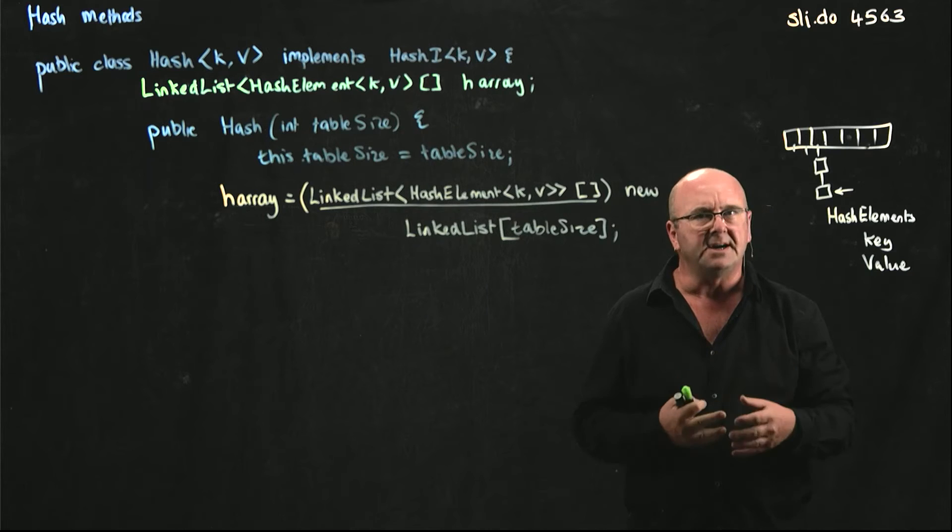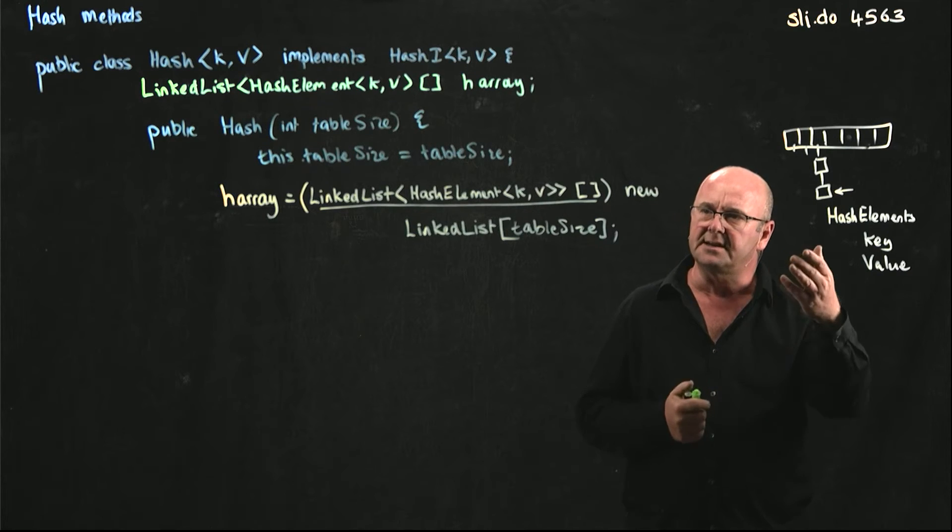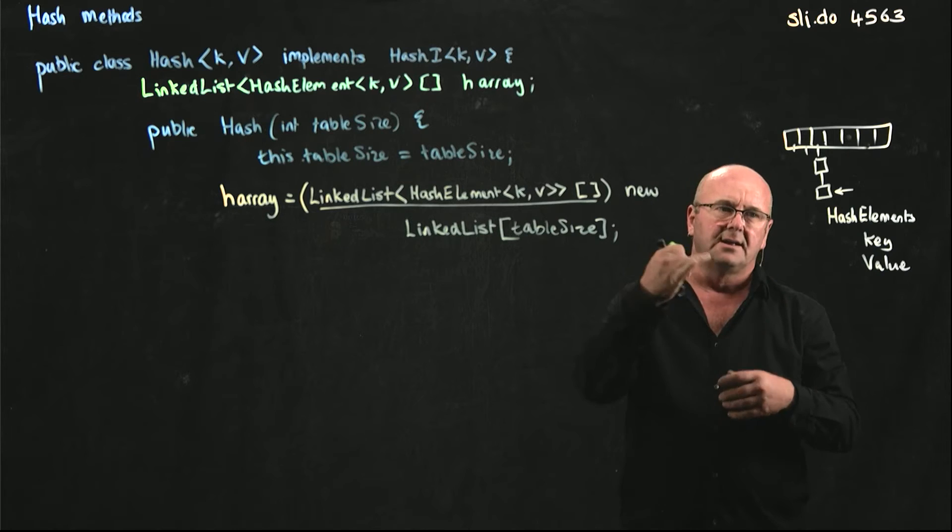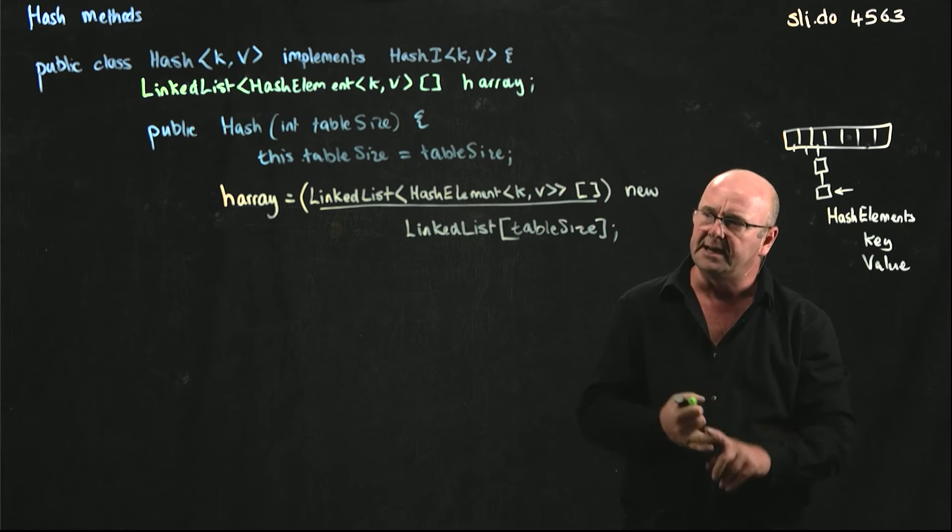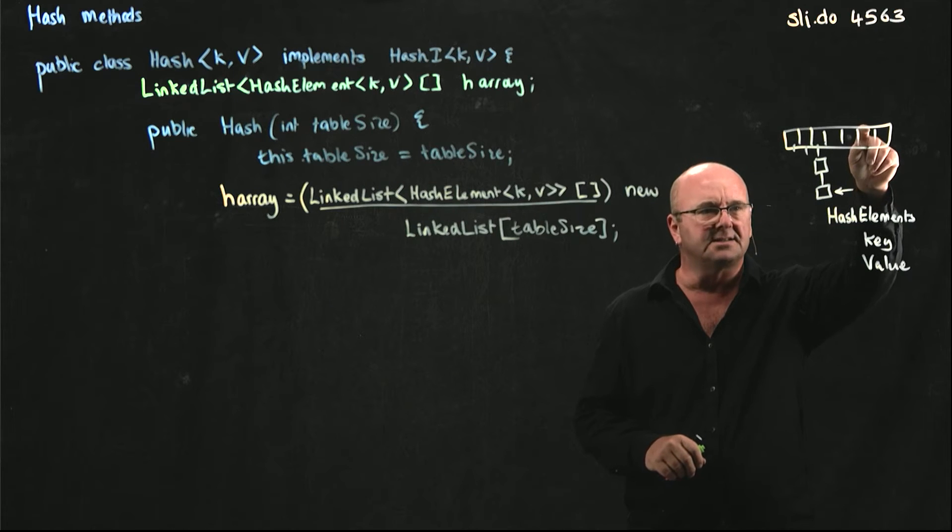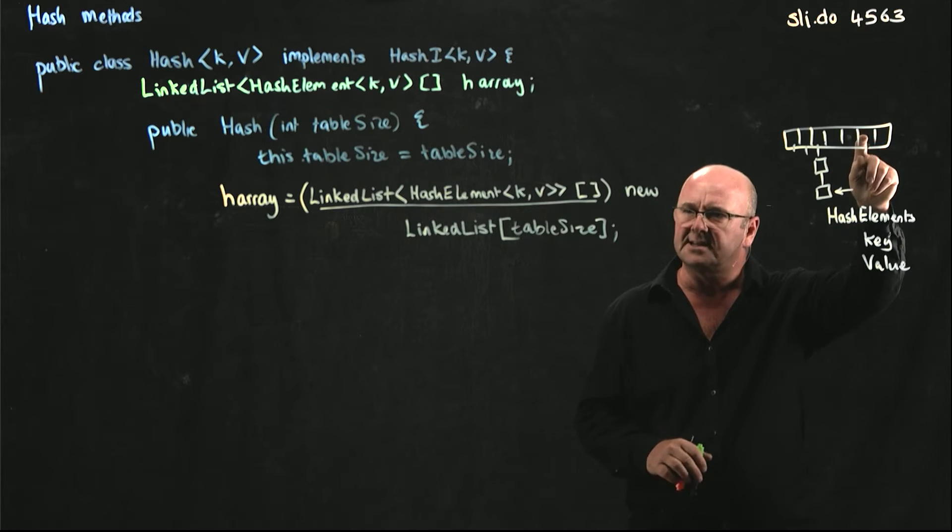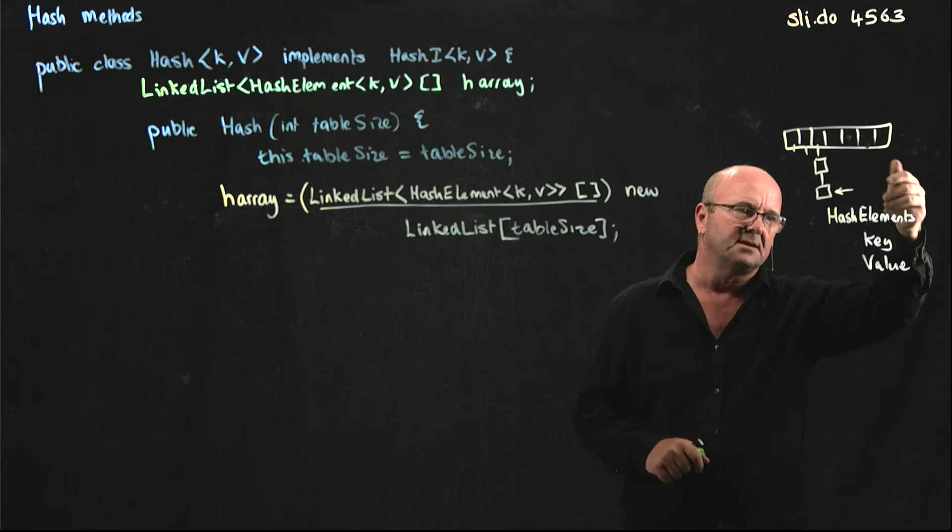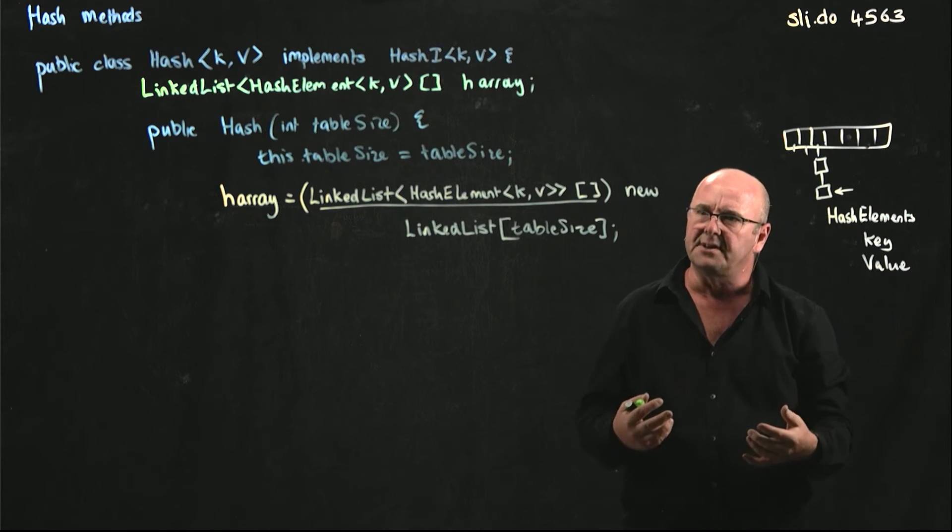If we want to find whether we have an element in our data structure, we get the hash code, make it positive, mod it on the table size, go to that index, and then say, is there a linked list there? If there's not, return null. If there is, go through the linked list to see if it's got the element.